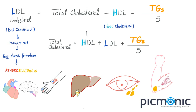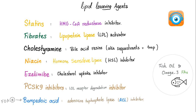So when statins lower your LDL, that means they lower your total cholesterol according to the equation. When fibrates lower your triglycerides, that means they lower your total cholesterol too. Lowering total cholesterol is good if you have hyperlipidemia or hypercholesterolemia. The lipid-lowering agents include statins, fibrates, cholestyramine, niacin, ezetimibe, PCSK9 inhibitors, and the brand-new bempedoic acid.